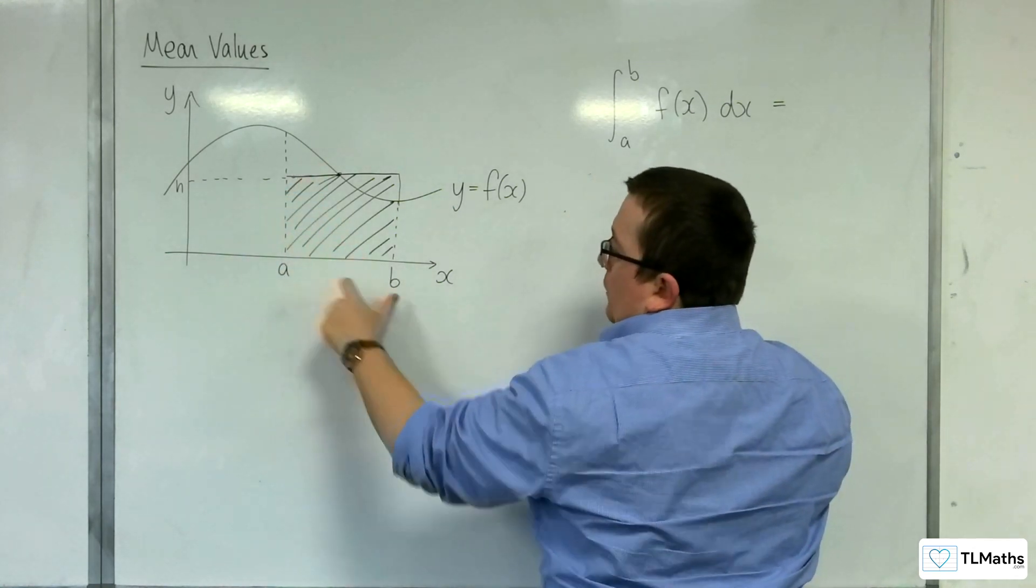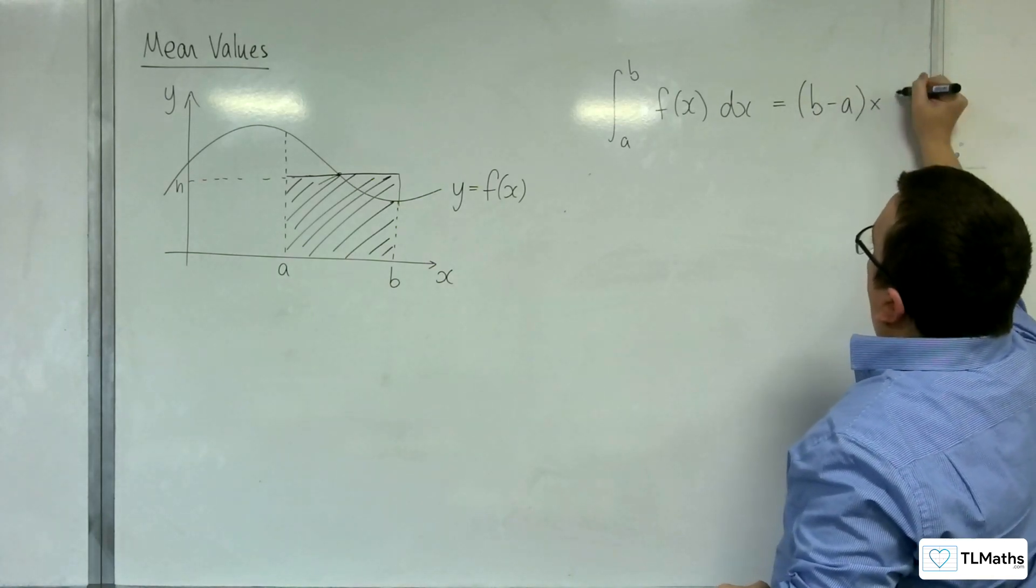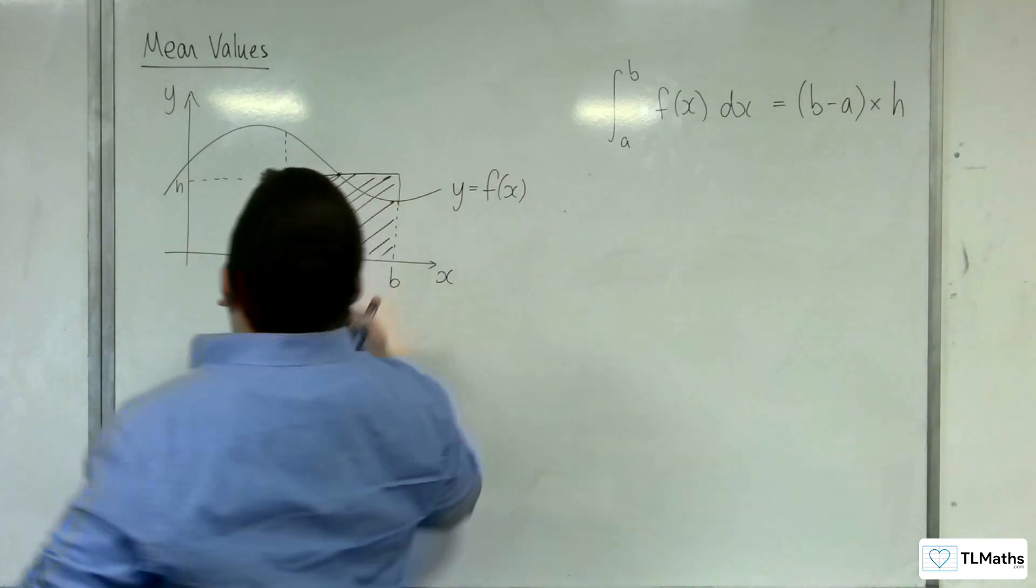So the base length is b take away a, and that will be multiplied by h, the height of the rectangle.